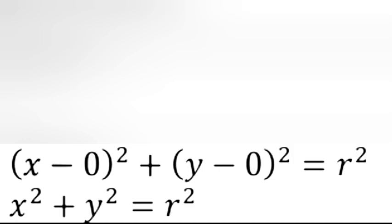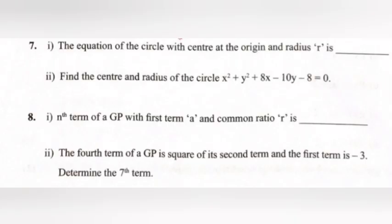Part ii: Find the center and radius of the circle x² + y² + 8x - 10y - 8 = 0. Answer: Center (-4, 5), radius 7.